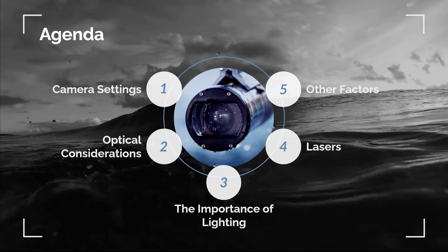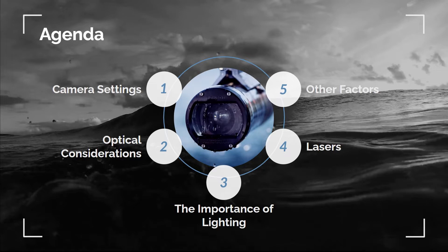Today I'll be covering camera settings, including the three main pillars of photography: aperture, shutter speed, and ISO. Next, I'll cover optical considerations such as sharpness, distortion, chromatic aberration, and field of view. Then we'll talk about lighting, why lasers are used underwater, and finally other topics such as JPEG, RAW, IP cameras, and mechanical considerations.